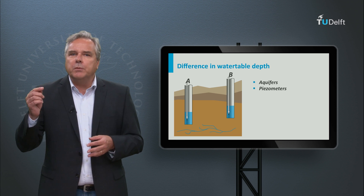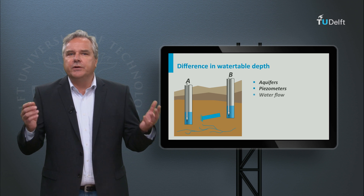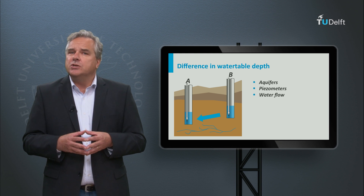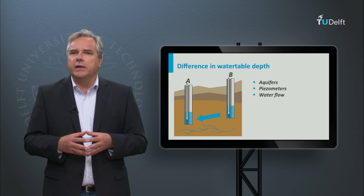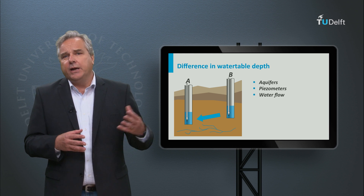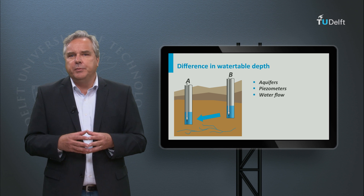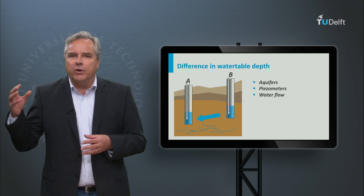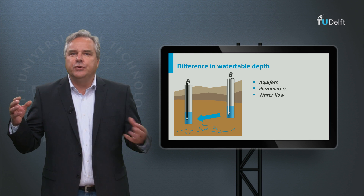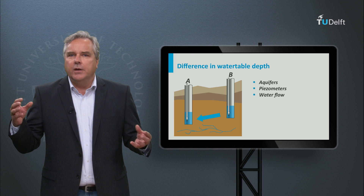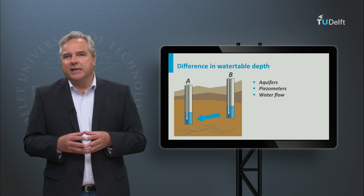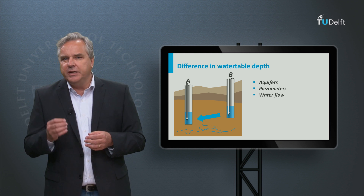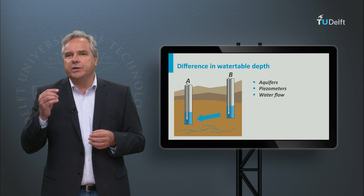Water moves from one point to another when there is a difference in groundwater table depth at these points. So if you would dig a well at point A and a well at point B, and the water table at B is higher than at A, water would flow from B to A.